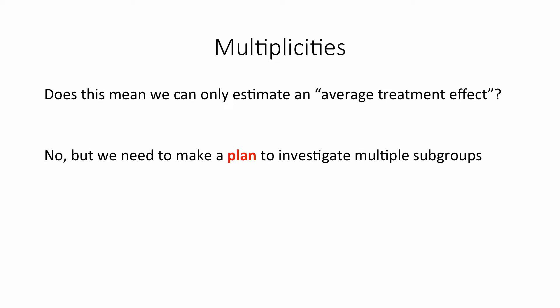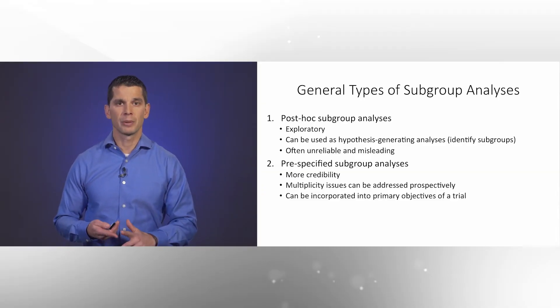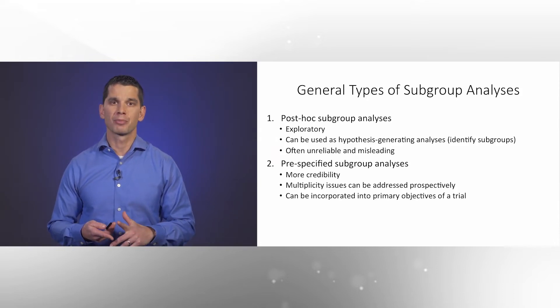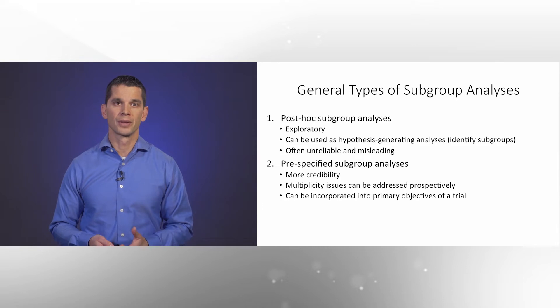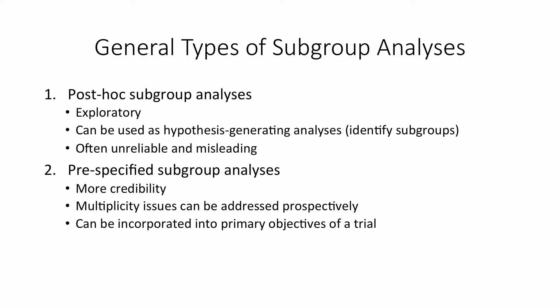So with respect to multiplicities, does this mean that we are stuck with only estimating an average treatment effect in the population? I would argue no, but we need to make a very good plan to investigate multiple subgroups. There are two general types of subgroup analyses. The first is post-hoc subgroup analyses — analyses not planned in advance, which are exploratory and hypothesis-generating but unreliable and misleading due to multiplicity. The second type is pre-specified subgroup analyses, which have more credibility, can prospectively address multiplicity issues, and can incorporate subgroup analyses into the primary objectives of a trial.